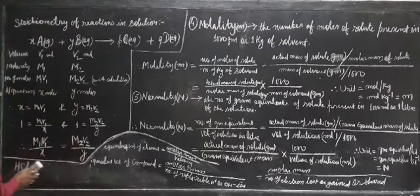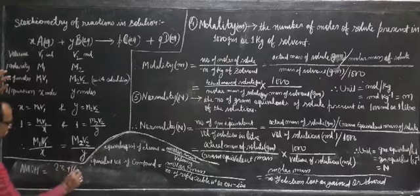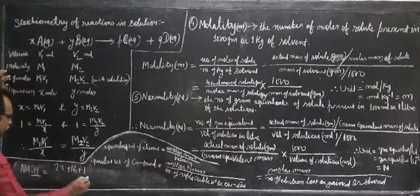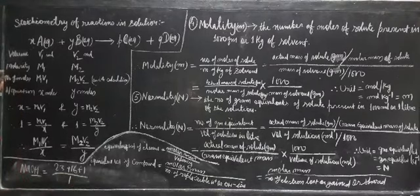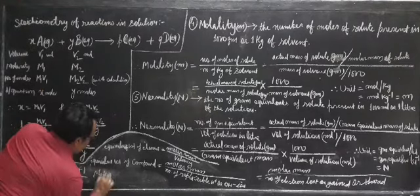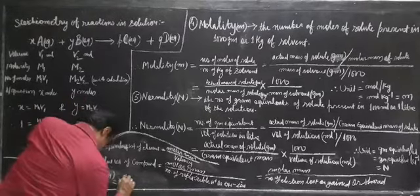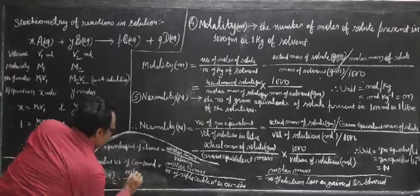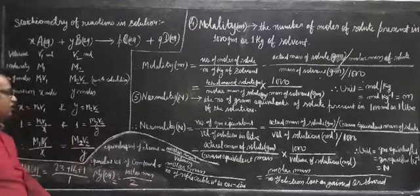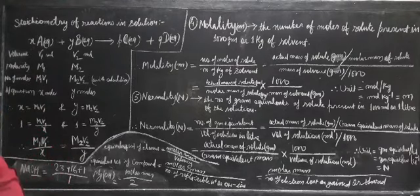For the equivalent weight of a base, divide the molar mass by the number of replaceable hydroxyl (OH⁻) ions. For sodium hydroxide (NaOH): divide molar mass by 1 (one OH group), giving the equivalent weight directly. For magnesium hydroxide Mg(OH)2: divide the molar mass by 2 replaceable OH groups. In this way we can find the equivalent weight of acids and bases.